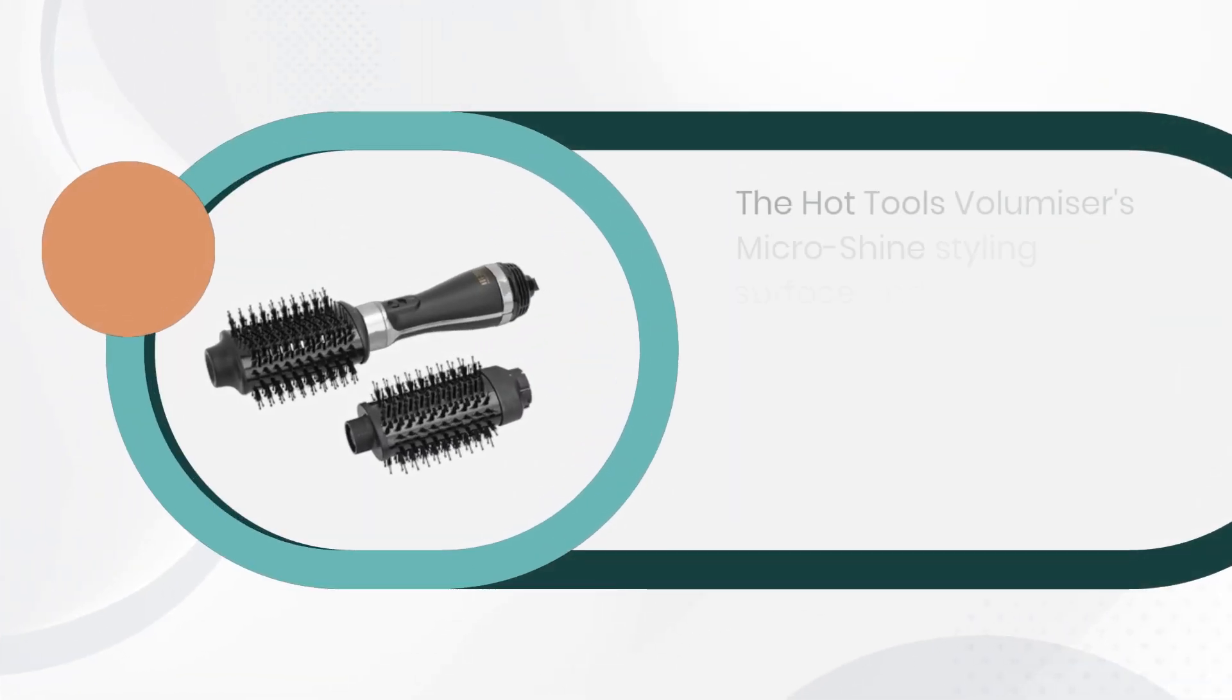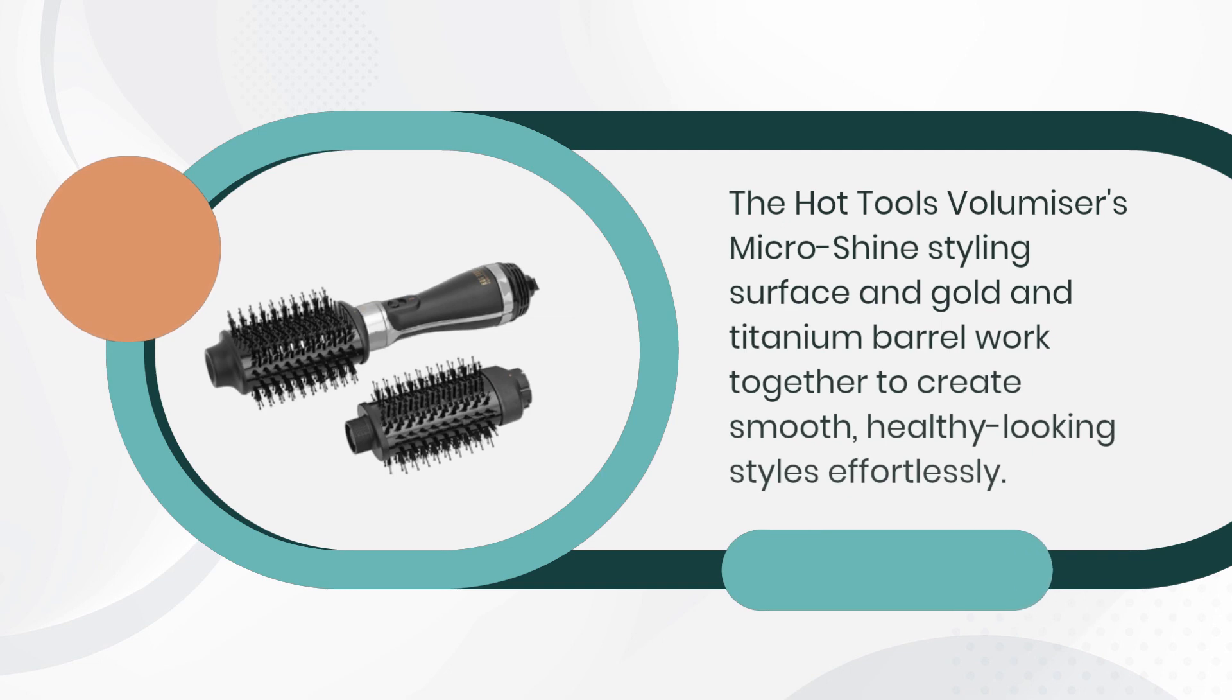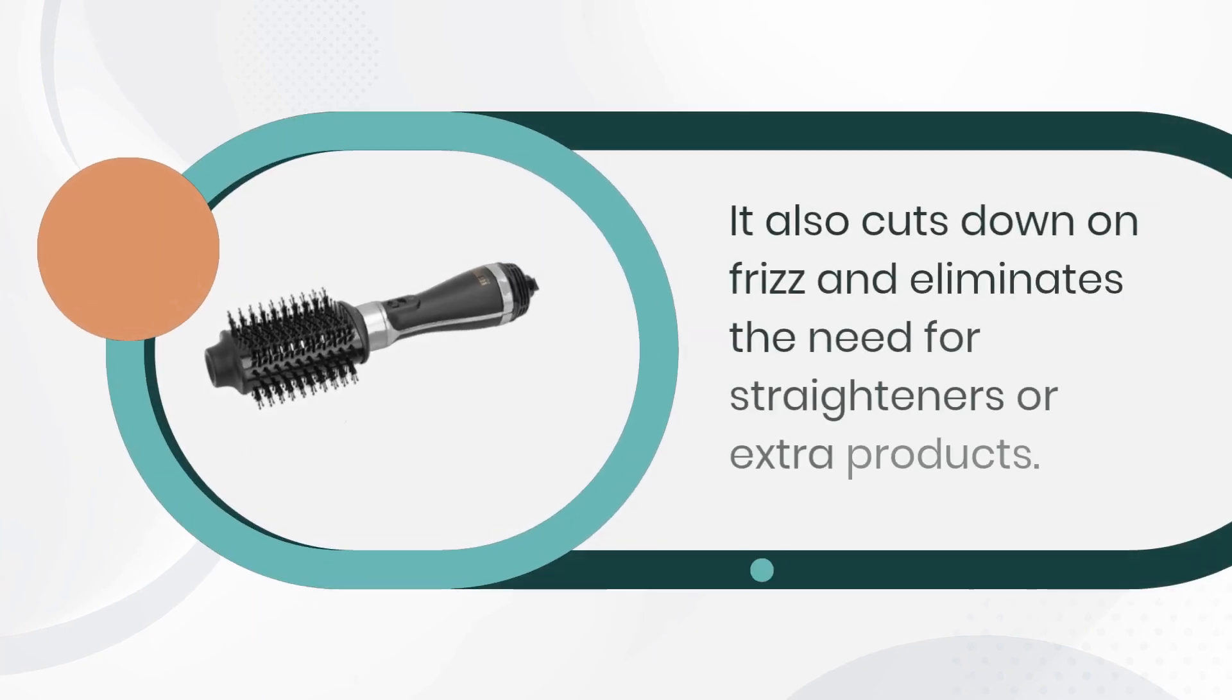The Hot Tools Volumizer's Micro Shine styling surface and gold and titanium barrel work together to create smooth, healthy-looking styles effortlessly. It also cuts down on frizz and eliminates the need for straighteners or extra products.